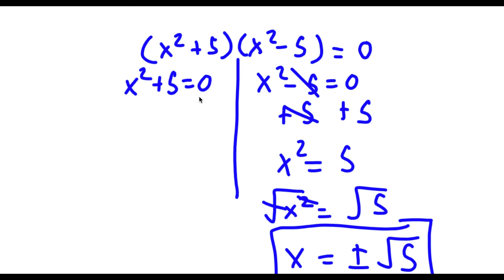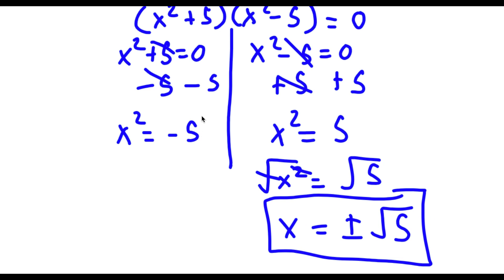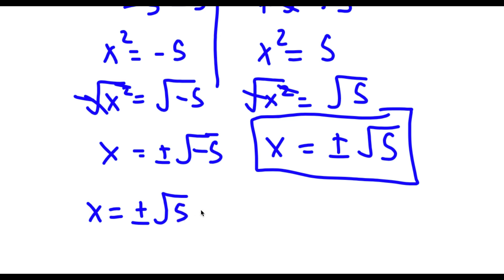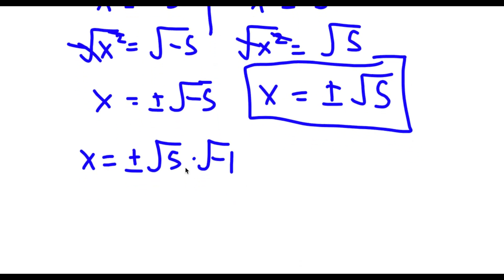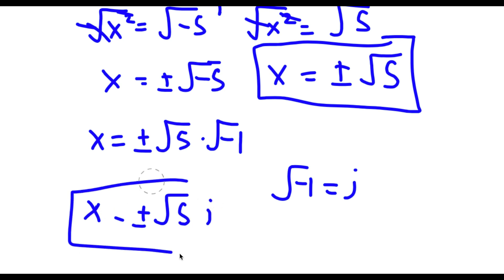Now for x squared plus 5 equals 0: I subtract 5 on both sides, so x squared equals negative 5. Taking the square root on both sides, x equals positive or negative square root of negative 5. Now the square root of negative 5 is the same as the square root of 5 times the square root of negative 1. The square root of negative 1 is the imaginary number i. So x equals positive or negative square root of 5 times i. So these are my four solutions to this problem.